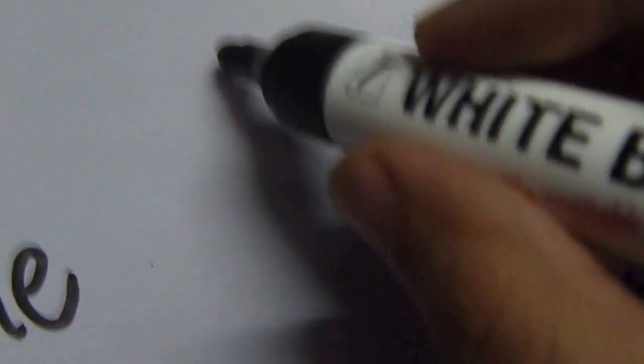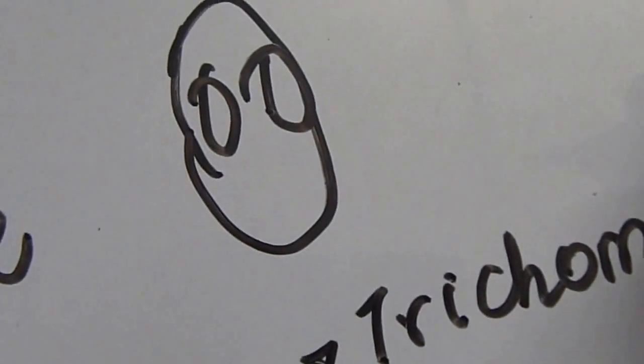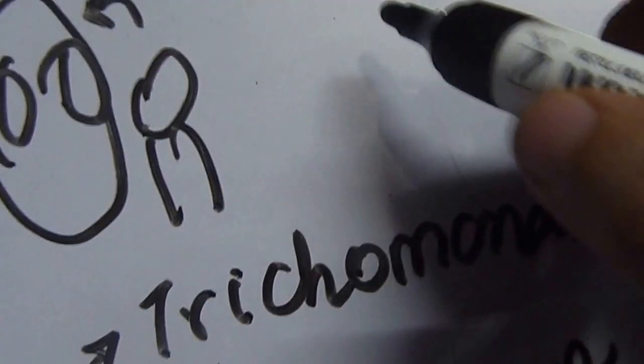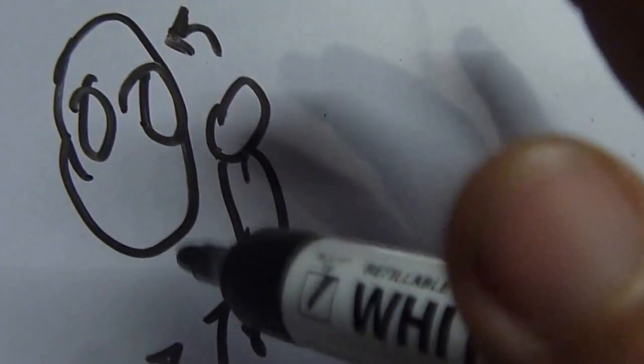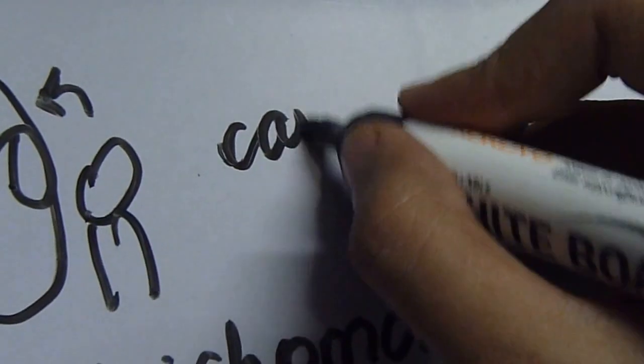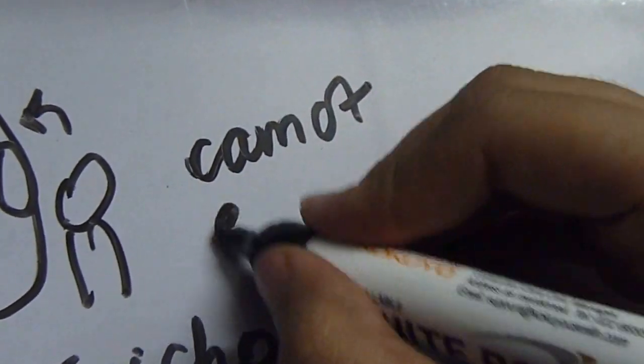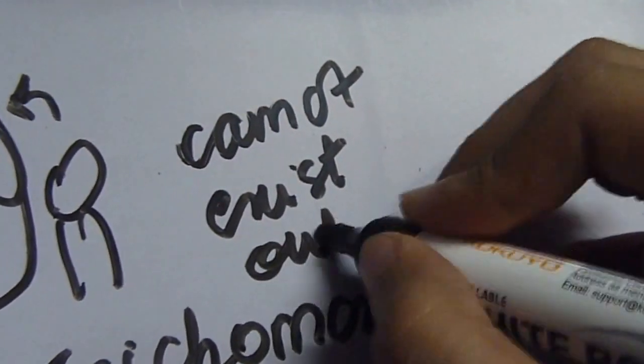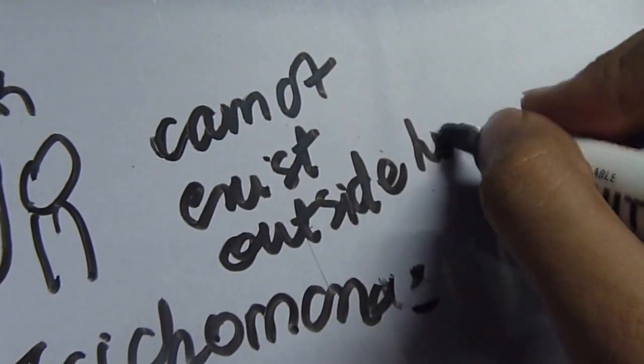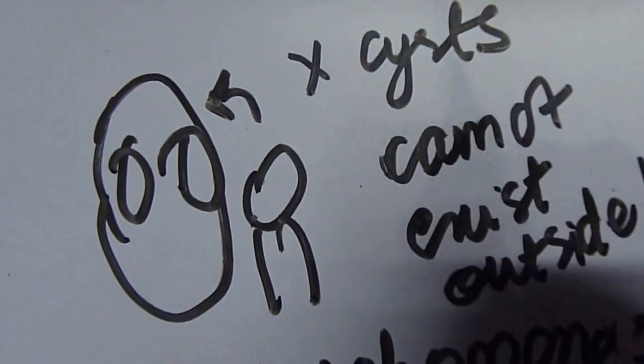If you've seen the movie Spider-Man, you remember there's a mask of the goblin, and the mask cannot function on its own. It requires a human like Osborn. This mask and its dependency on the human reminds you that Trichomonas vaginalis cannot exist outside humans, and that is basically because they don't have cyst forms. So there's no cysts, you're only stuck with trophozoites which are sexually transmitted.